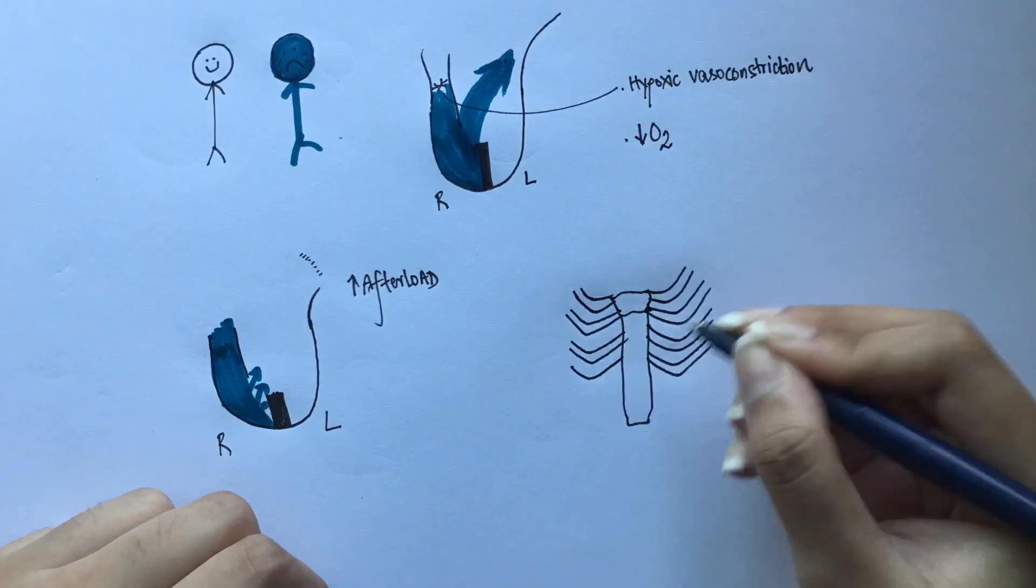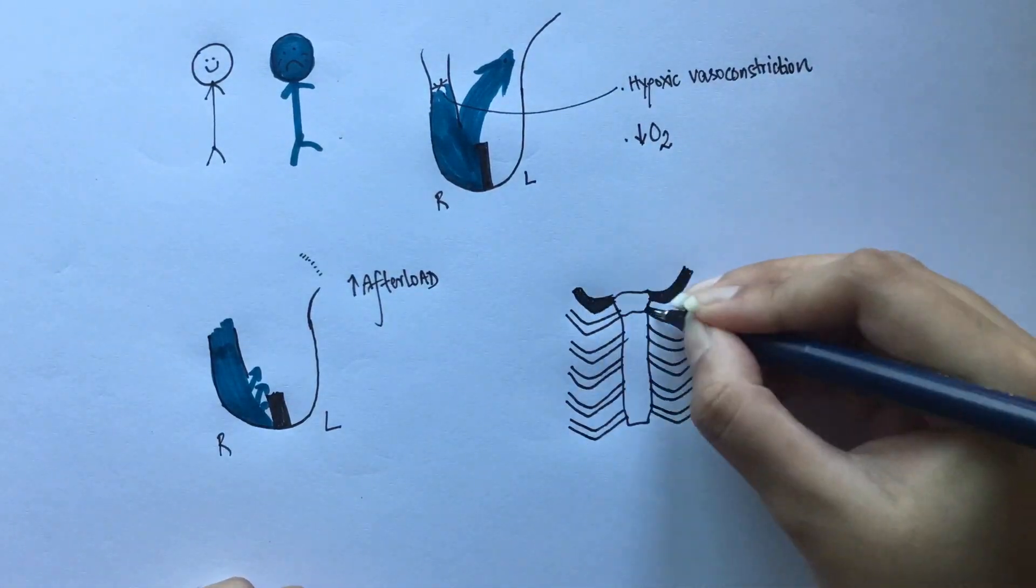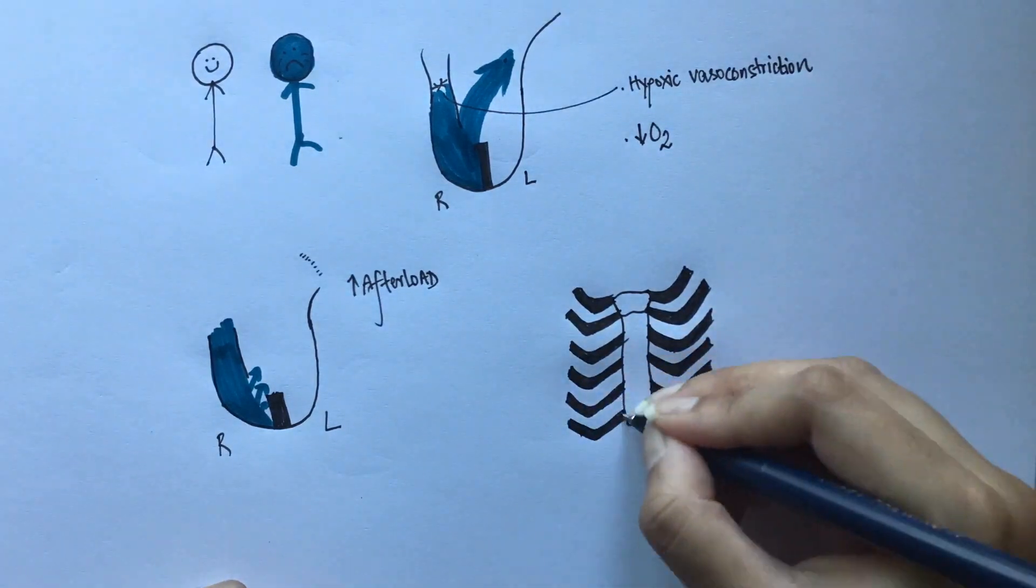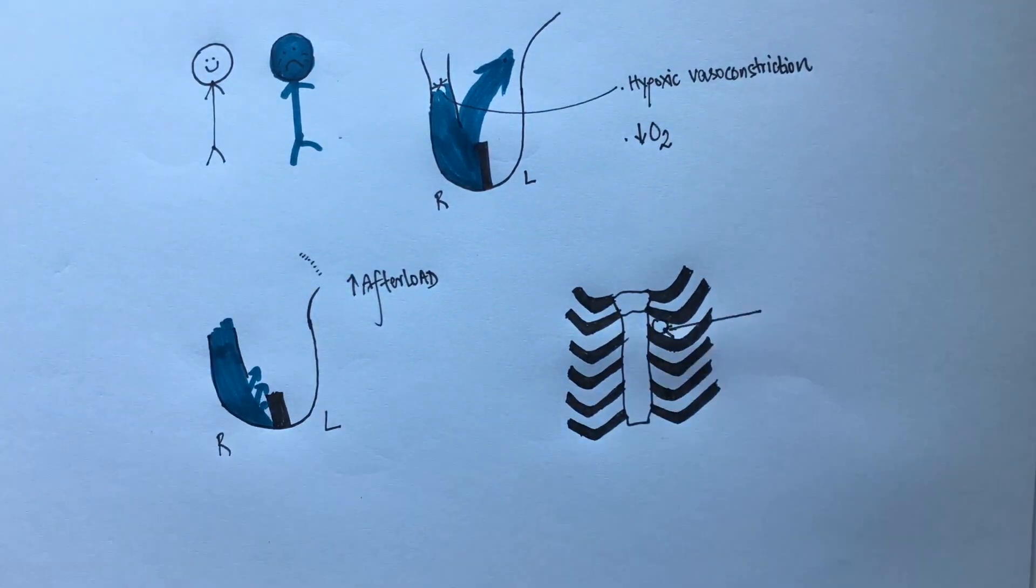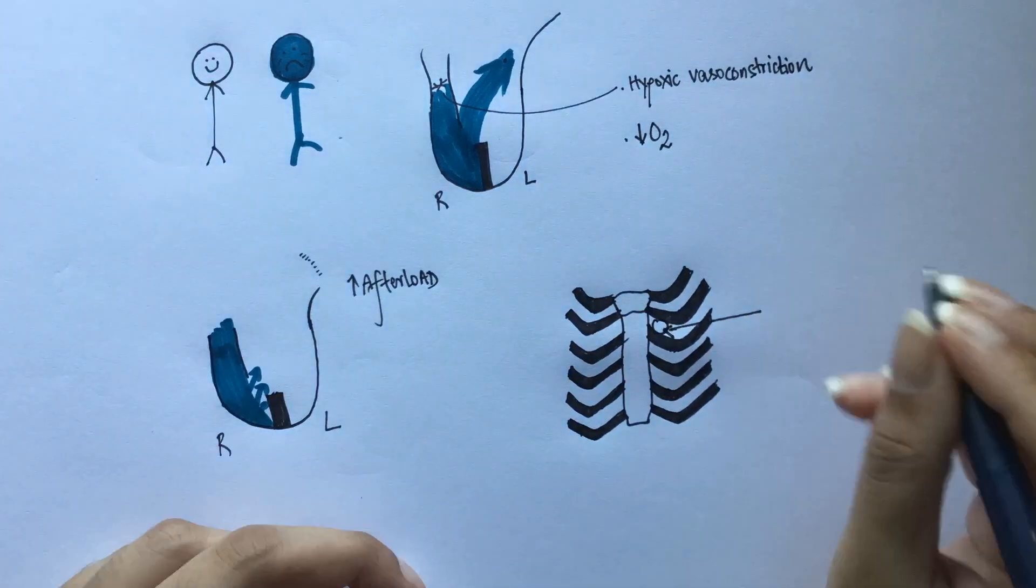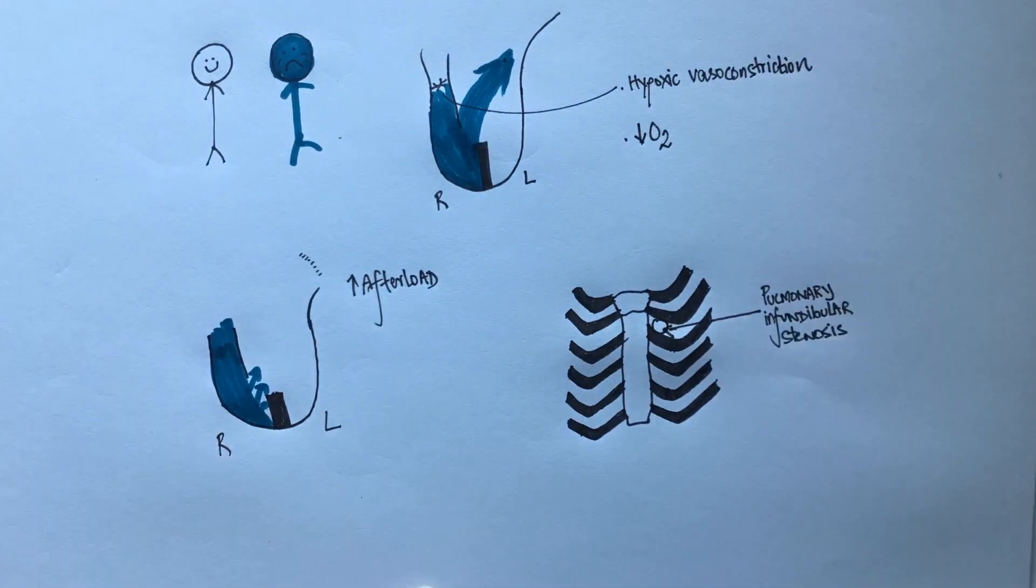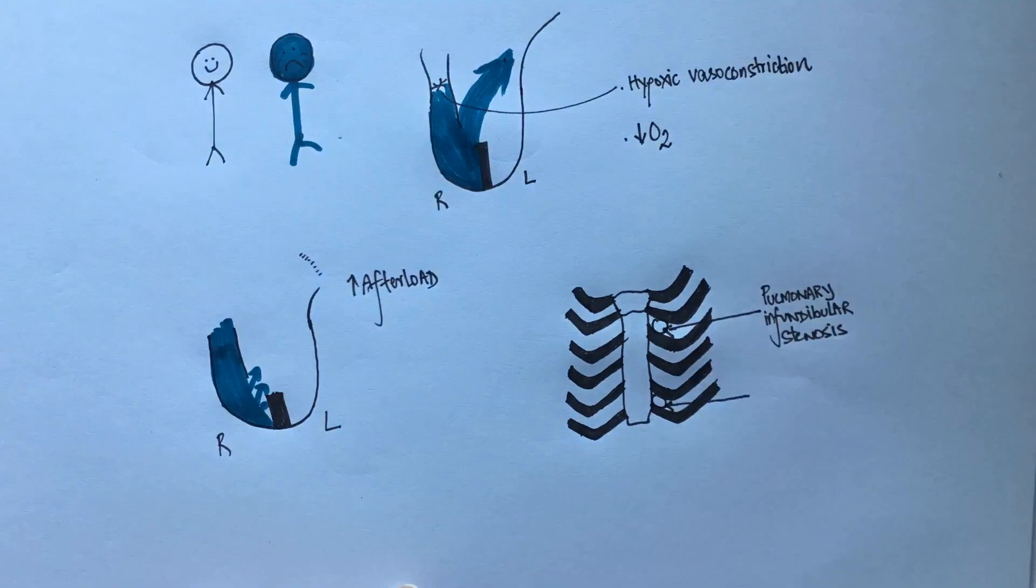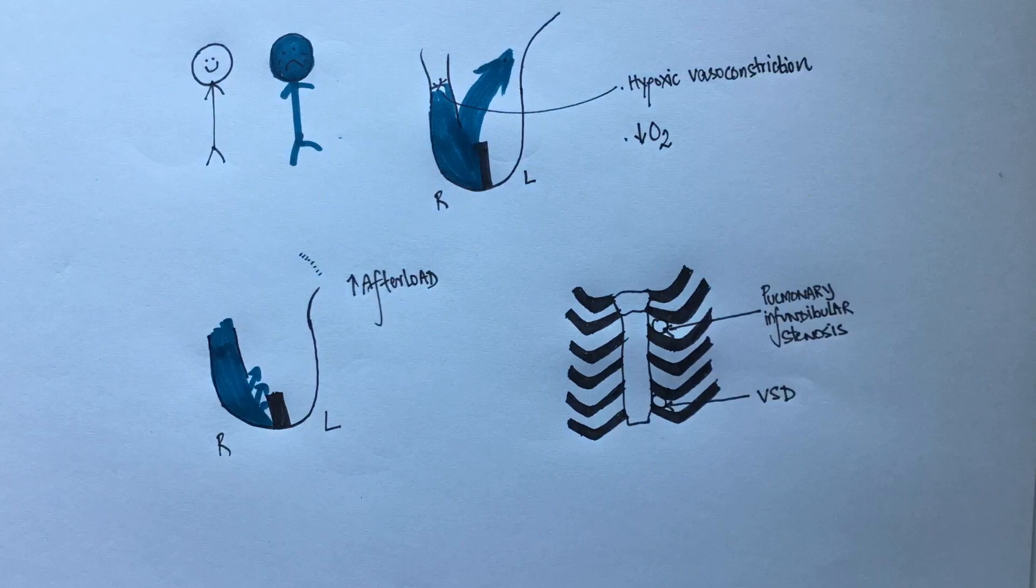When you auscultate the heart, you are likely to hear two murmurs. A harsh systolic murmur is heard at the pulmonic area. This is due to the obstruction of the right ventricular outflow tract. Another murmur which could possibly be heard is a holosystolic murmur at the tricuspid area. This is due to the ventricular septal defect.